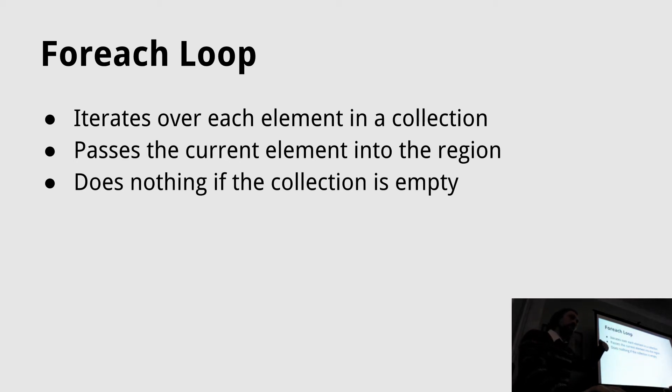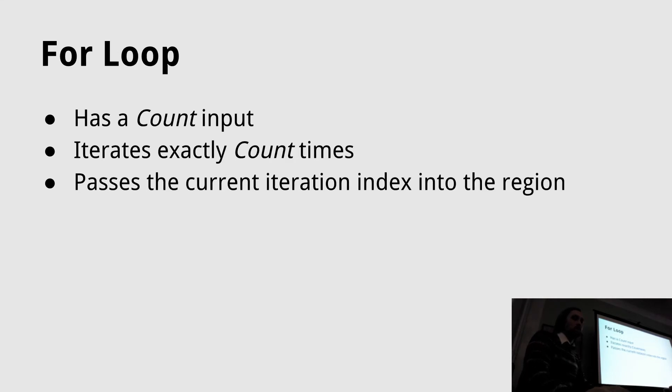And then how it works is you put the collection into the loop, and in each iteration you get one element of the loop. And the for loop has kind of the same features but with a fixed count.